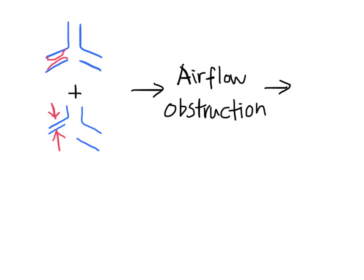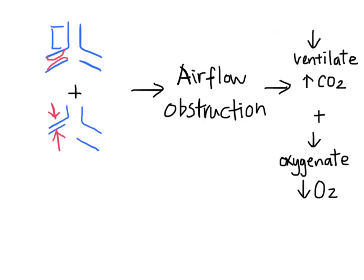The airway edema and bronchoconstriction causes airflow obstruction. As a result, the patient is unable to get rid of their CO2 and also unable to oxygenate. Patients can die quickly from respiratory arrest.